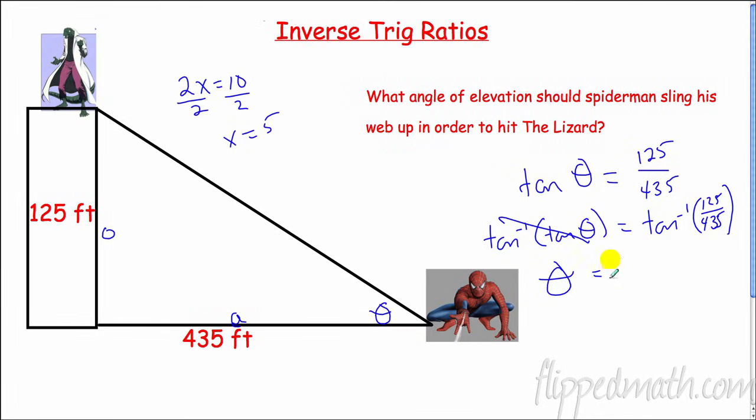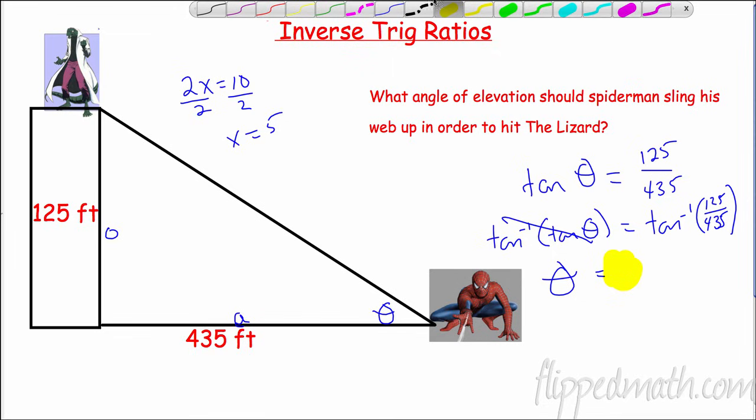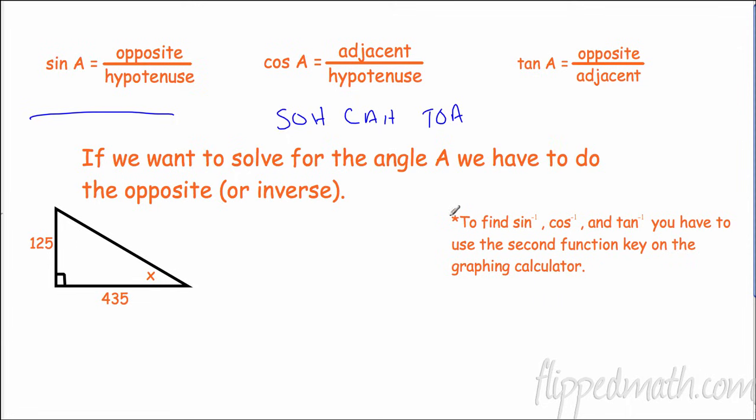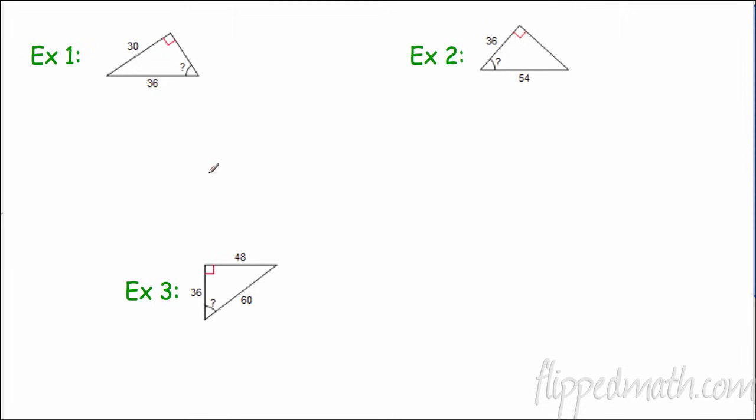So the angle would be 16.0 or 16 degrees. So that one wasn't so bad at all. That was 16 degrees. Again, to find this inverse sine, inverse cosine, or inverse tangent, you have to use the second function key on that graphing calculator.